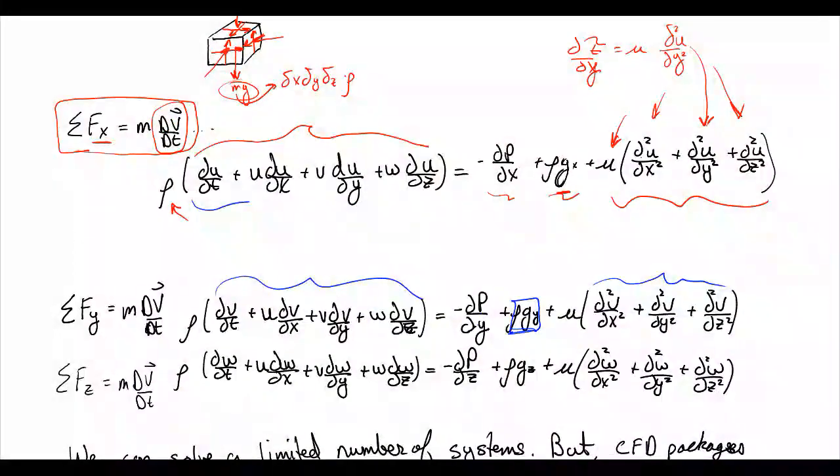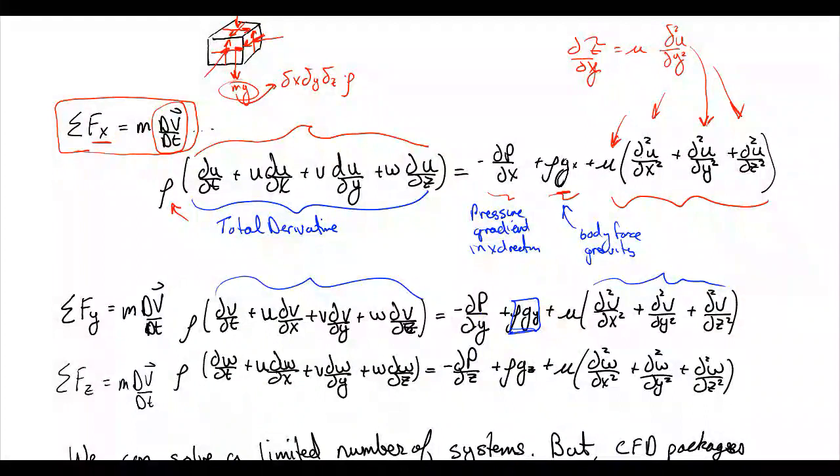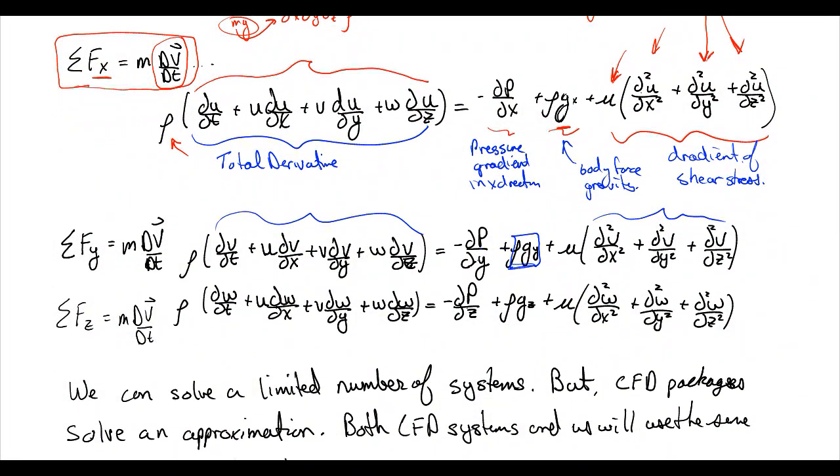So we can label all these different parts certain things. Remember, I told you this was the acceleration in an Eulerian point of view. It has a name. It's called the total derivative. We are going to derive this total derivative in a later lecture, right before we start doing control volume approaches, because we need it to start looking at control volumes and Reynolds' transport theorem. This is a pressure gradient here, specifically in x direction. This is a body force, which in this case is gravity. And in this case here, this is our gradient of shear stress. So pressure gradient, shear stress gradient, that's what we got.